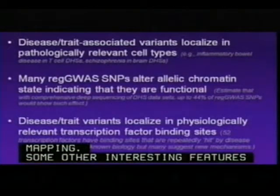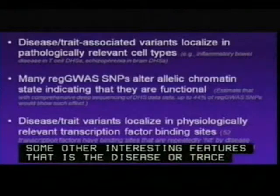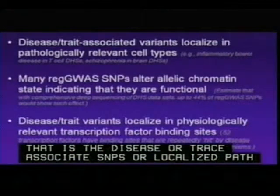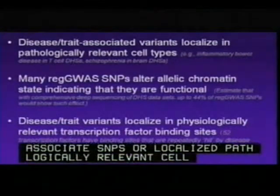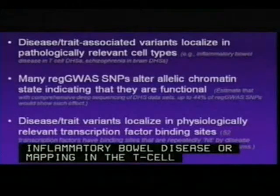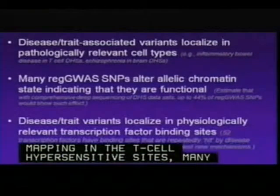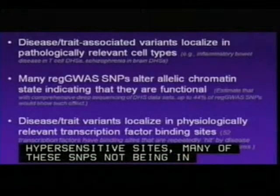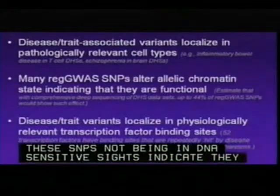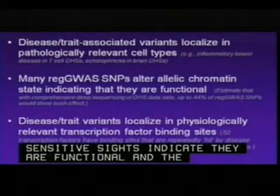Other interesting features: disease- or trait-associated GWAS SNPs are localized in pathologically relevant cell types. For example, SNPs associated with inflammatory bowel disease are mapping in T-cell DNase hypersensitive sites. Many of these SNPs mapping in DNase hypersensitive sites alter allelic chromatin states, indicating they are functional, and GWAS SNPs are localizing at physiologically relevant transcription factor binding sites.